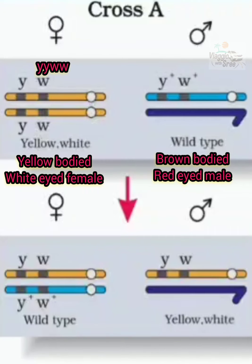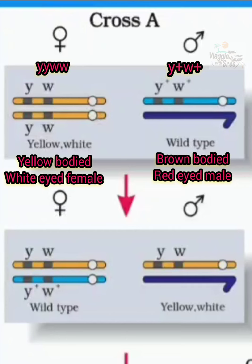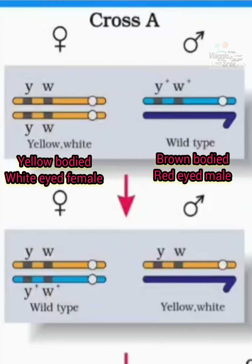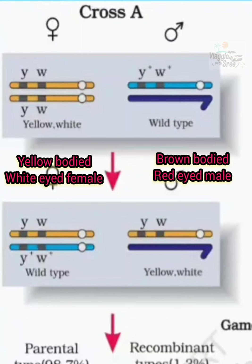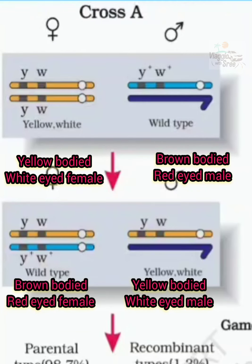The dominant trait is indicated by the capital letter or plus sign. There is the X chromosome with Y-plus and W-plus. In Drosophila, these are sex-linked characters on the sex chromosomes, also called allosomes. In F1, the female is the wild type and the male is the hemizygous recessive type.